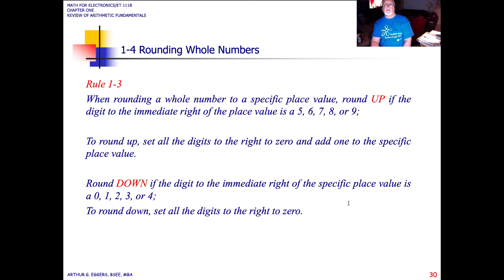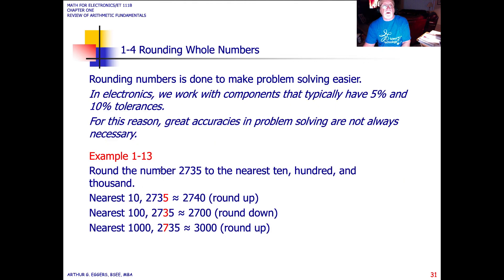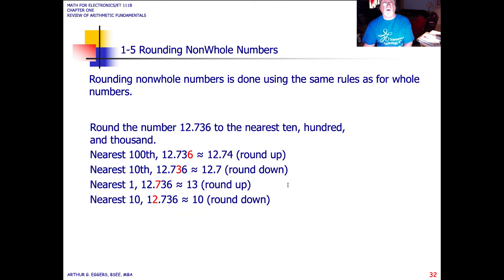In rounding, the rules are generally anything a number greater than five, we round up. Anything less than four, four or less, we round down. So in these examples, if we want to round to the nearest tenth, we have a five, so that's telling us round up. The nearest hundredth, we have a three, that means round down. The nearest one-thousandth, we have a seven, round up. These apply both for fractions and whole numbers.